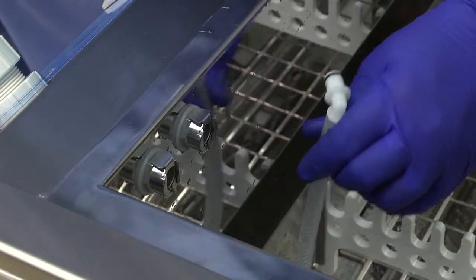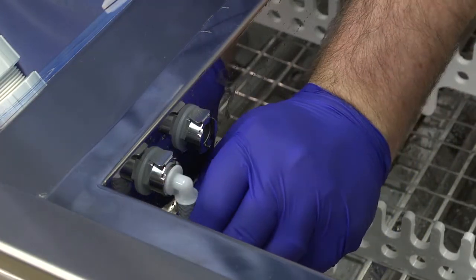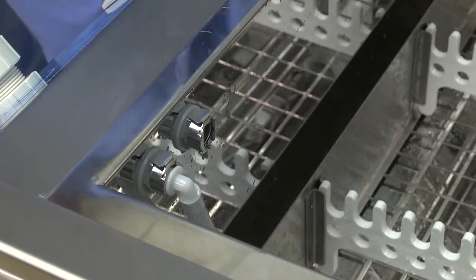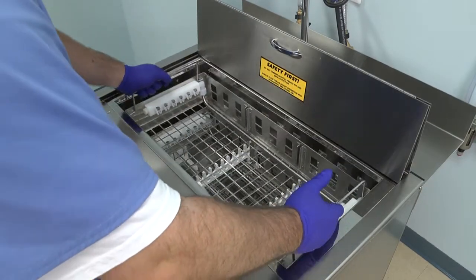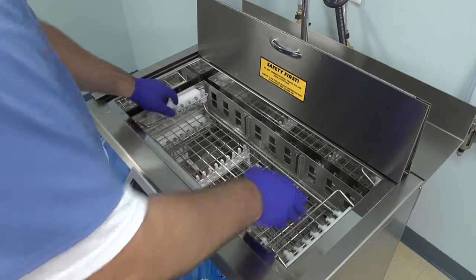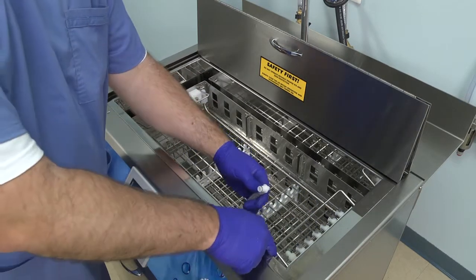Attach the quick connect hose from the basket to port number one on the inside of your machine. Next, insert the top tray again with the port cutout on the right side, then attach the quick connect hose from this tray to port number two inside your machine.